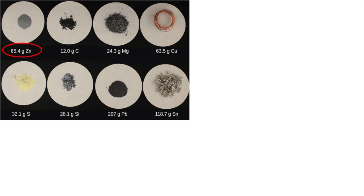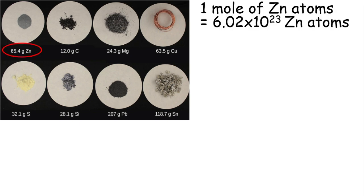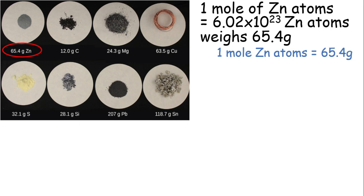If you notice, there are numbers below the circles. Before we discuss that, let's recall again that a mole of zinc atoms is equal to 6.02 times 10 raised to the 23rd power. That number weighs 65.4 grams. Since they are all equal, we can say that one mole of zinc atoms is equal to 65.4 grams. Where did I get 65.4? It came from the periodic table.